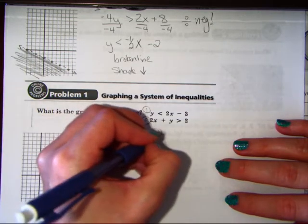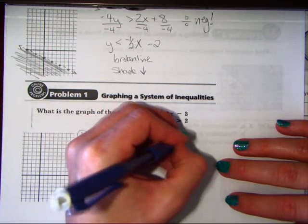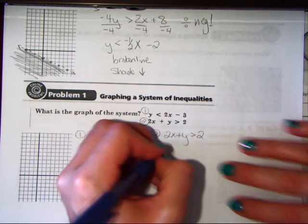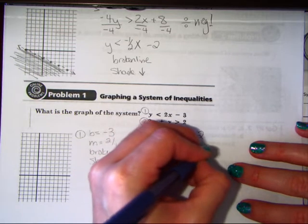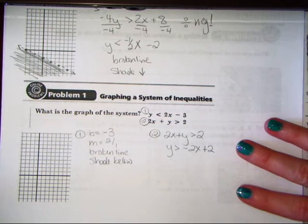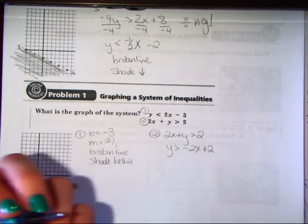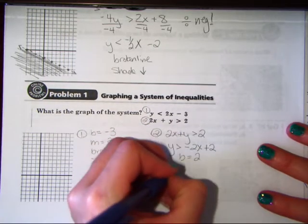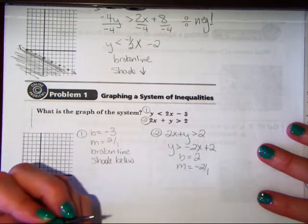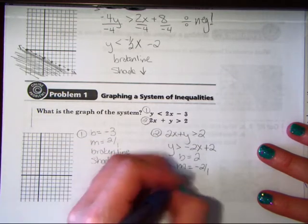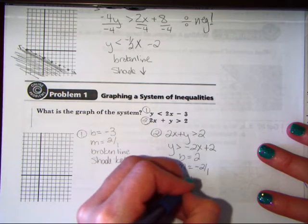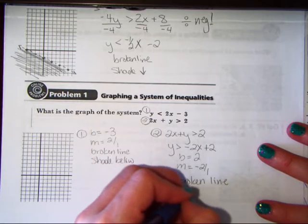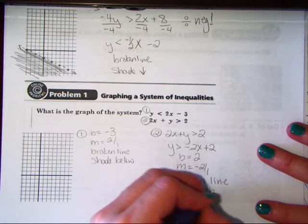Well, we have equation number 1, and we have equation number 2. Equation number 1 is ready to go. We have our y-intercept, or our b, of negative 3. We have our slope of 2 over 1. We are going to make sure we use a broken line, because our boundary line is not part of our answer, because it's not equal to. And we will shade below.